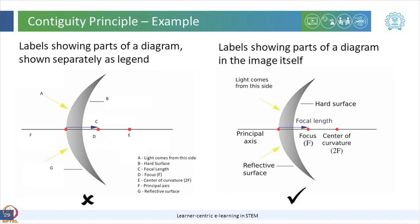Let us look at another example frequently encountered in STEM disciplines. We often use images with labels to represent facts and concepts. In such cases, contiguity principle recommends that the labels be placed close to the image rather than at the end, bottom, or side of the image in the form of a legend.